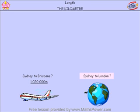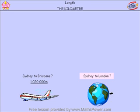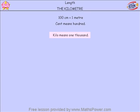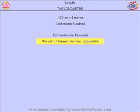And what if we wanted to know how far it was from one country to another country on the other side of the world? Let's use Sydney to London for example. That would be a number far too big to deal with. So, just like when we make 100 centimetres into 1 metre because the prefix 'cent' means hundred, well, the prefix 'kilo' means thousand. So every thousand metres, we call one kilometre.